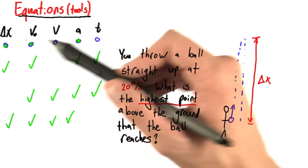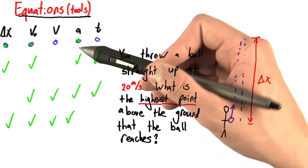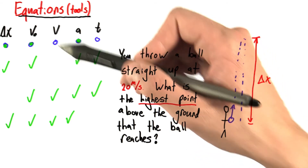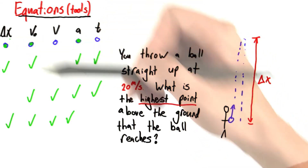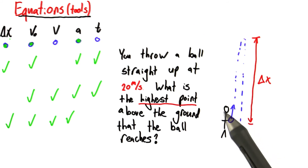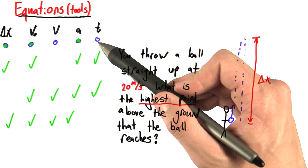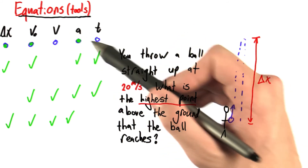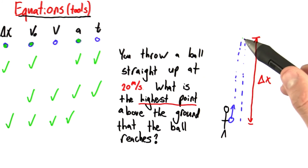The problem gives me the initial velocity and I know the acceleration. I'll need one more piece of information if I'm going to solve for delta x. If you've been listening very carefully, I gave a hint — which of these two variables do we actually know when the ball's at the top of its trajectory?